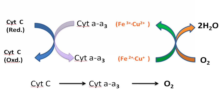Cytochrome A is paired with copper A, and cytochrome A3 is paired with copper B. During electron transfer, the iron atoms of the heme cycle between ferric and ferrous states, while the copper atoms cycle between cuprous and cupric states. Cytochrome C oxidase transfers four electrons to molecular oxygen to form two molecules of water. Oxygen is tightly bound between heme A3 and copper B during its reduction, and is released only after its complete reduction to water.